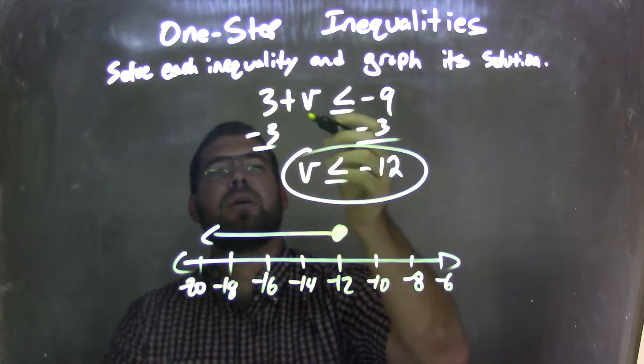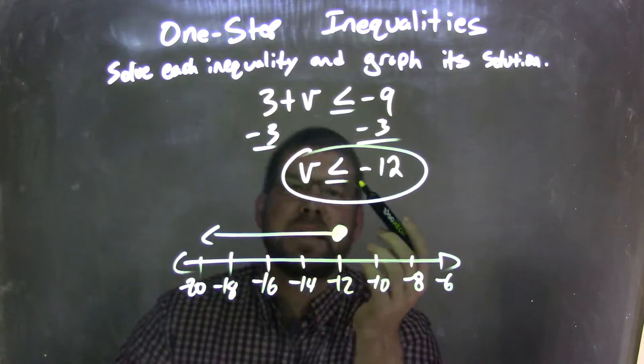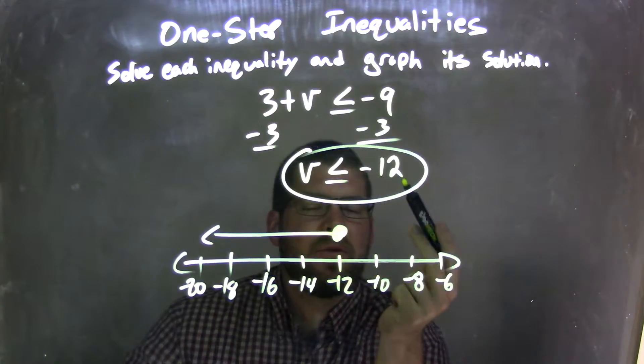So let's recap. We start with 3 plus v is less than or equal to negative 9. I subtract 3 from both sides and get v by itself. That gave me v is less than or equal to negative 12.